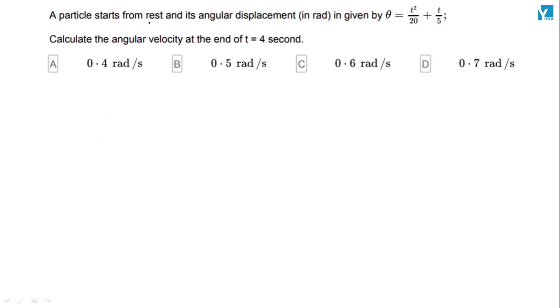The particle starts from rest, meaning initial velocity is zero. It may be linear velocity or angular velocity. Its angular displacement theta is given by the formula t squared upon 20 plus t by 5. Calculate the angular velocity of the particle when time is 4 seconds.